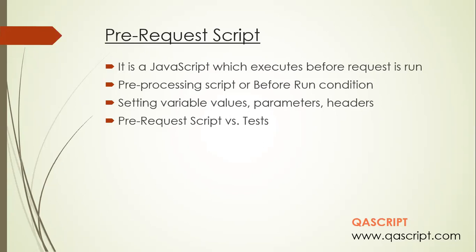You can use a pre-request script for many things. Mainly, you can set variable values — it can be any variable: your collection variable, your environment variable, or a simple local variable. You can also set parameter values or headers into your API requests using the pre-request script. There are other uses as well, but these are some of the main usages for pre-request scripts.